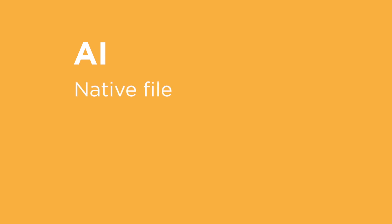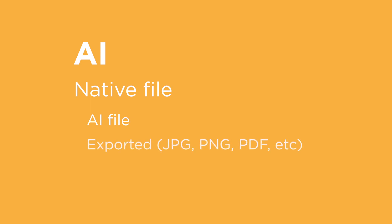First up is an AI file, which is an Adobe Illustrator file. This is considered a native file. When you have a native file, you'll usually have two versions: your AI file, and then whatever you export, like a PNG, JPEG, or sometimes an SVG. In your filing system, you'll have your AI and then that other file.